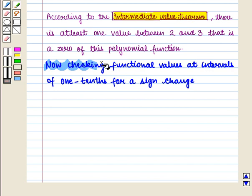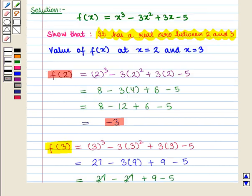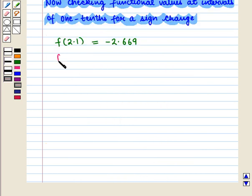Now, we check functional values at intervals of one tenth for a sign change. For this, we first find the value of f(2.1) and this is given by -2.669. Similarly, we find f(2.2) and it is given as -2.272.